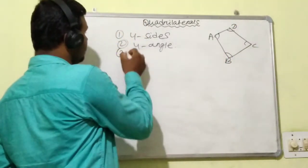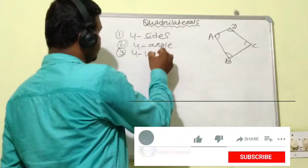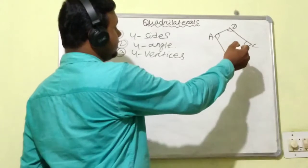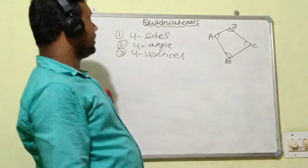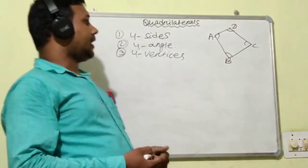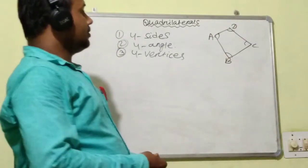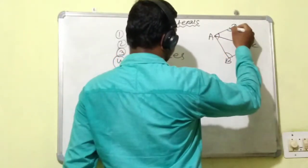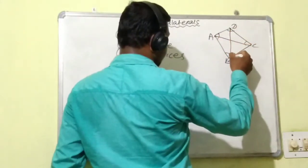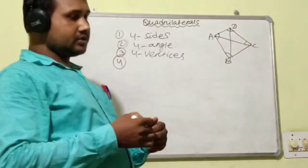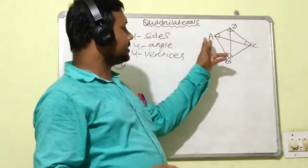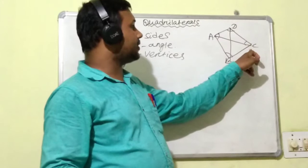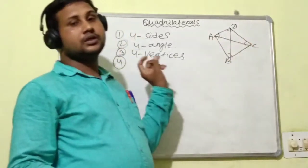There are also four vertices: A, B, C, and D. And also we will see another point — that is the diagonal. AC and BD are the two diagonals. The line segment joining two opposite vertices is called the diagonal.